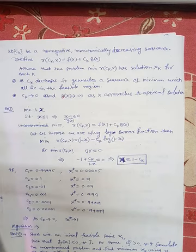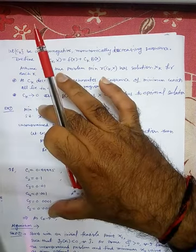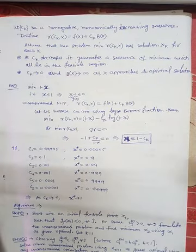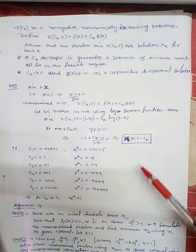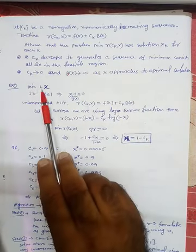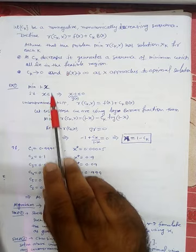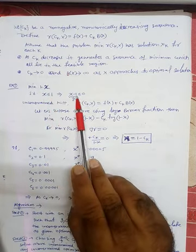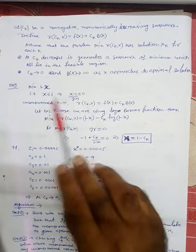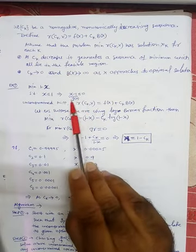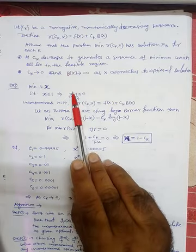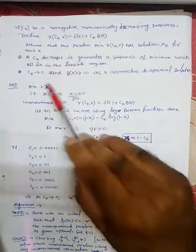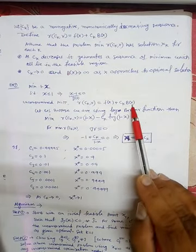Let us first take a single-dimensional problem, then give the algorithm for the n-dimensional case, and then take examples. Here we have the problem: minimize (1 − x) subject to x ≤ 1. The constraint g(x) = x − 1 ≤ 0. So g(x) = x − 1. Then r(c_k, x) = f(x) + c_k * b(x) = (1 − x) + c_k * b(x).